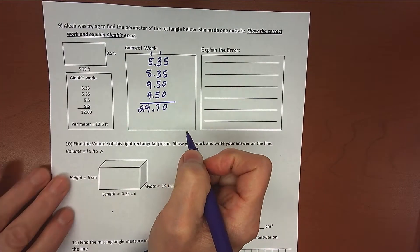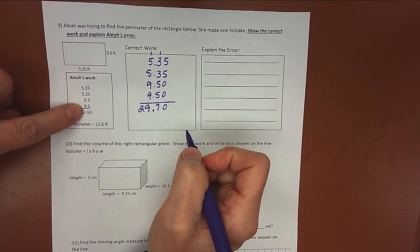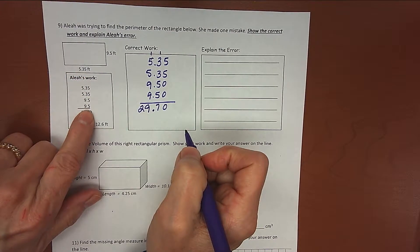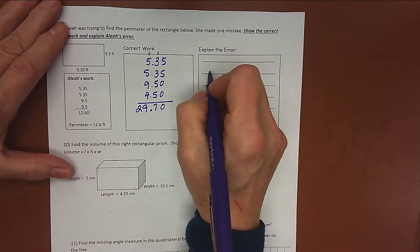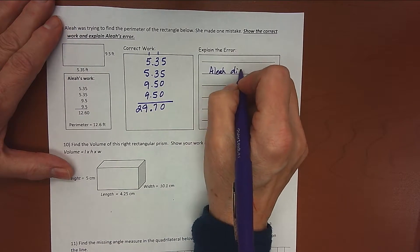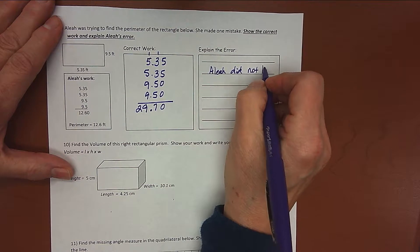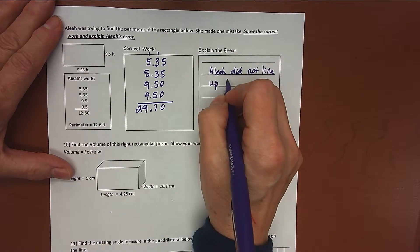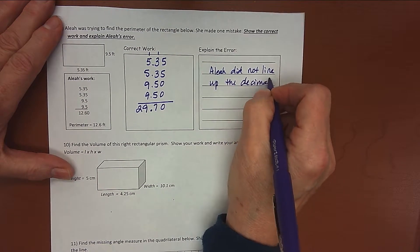29.7 should be my perimeter, and as I look over here, I see that what Aaliyah did is she didn't line up her decimals. She lined up the numbers, but not her decimals. So Aaliyah did not line up the decimals. Common mistake.